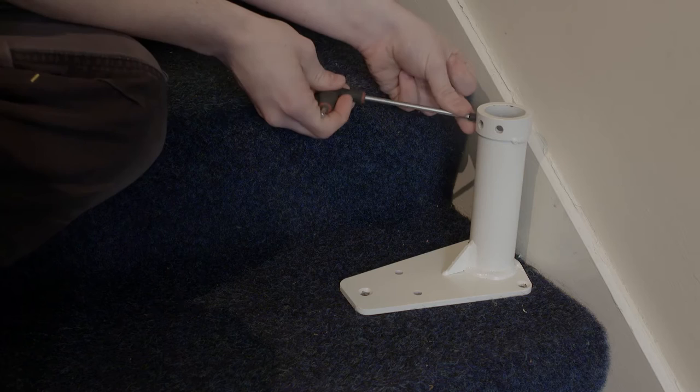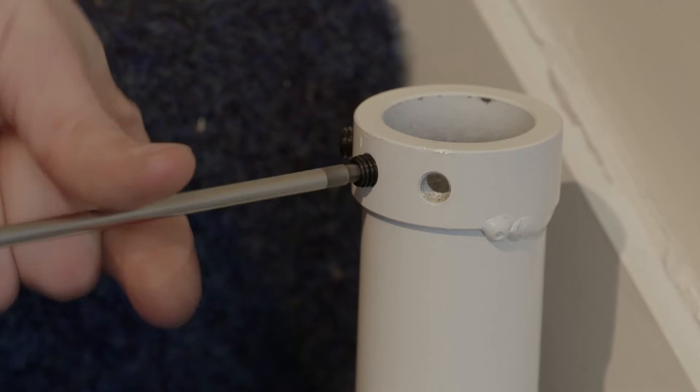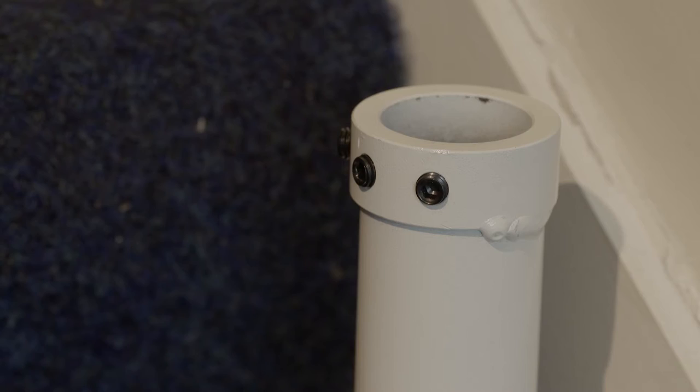Fit the 8mm grub screws to each of the leg bases, making sure they do not project into the inside of the base. Then place the bases in the position shown in the installation drawing.